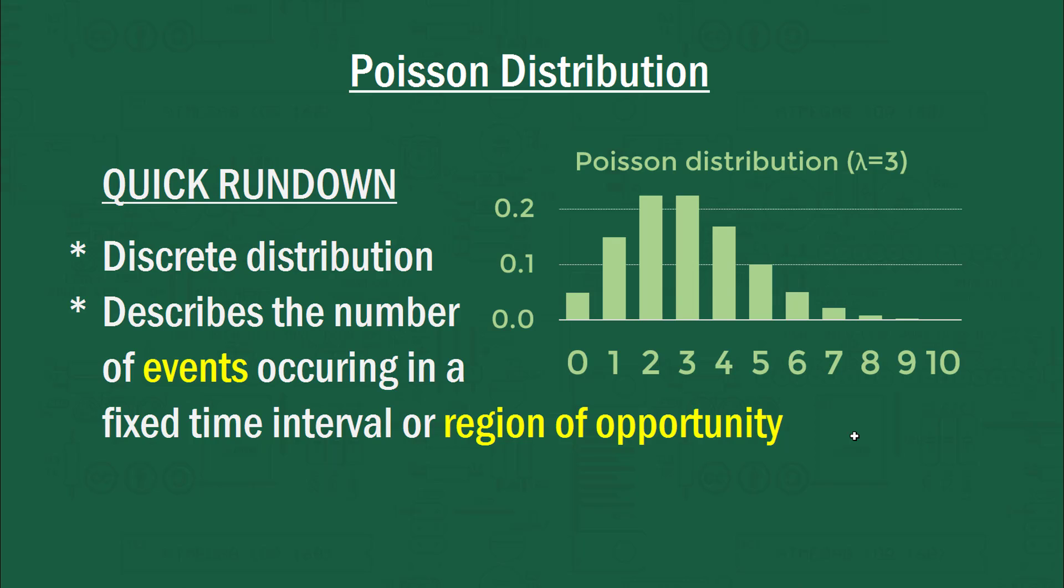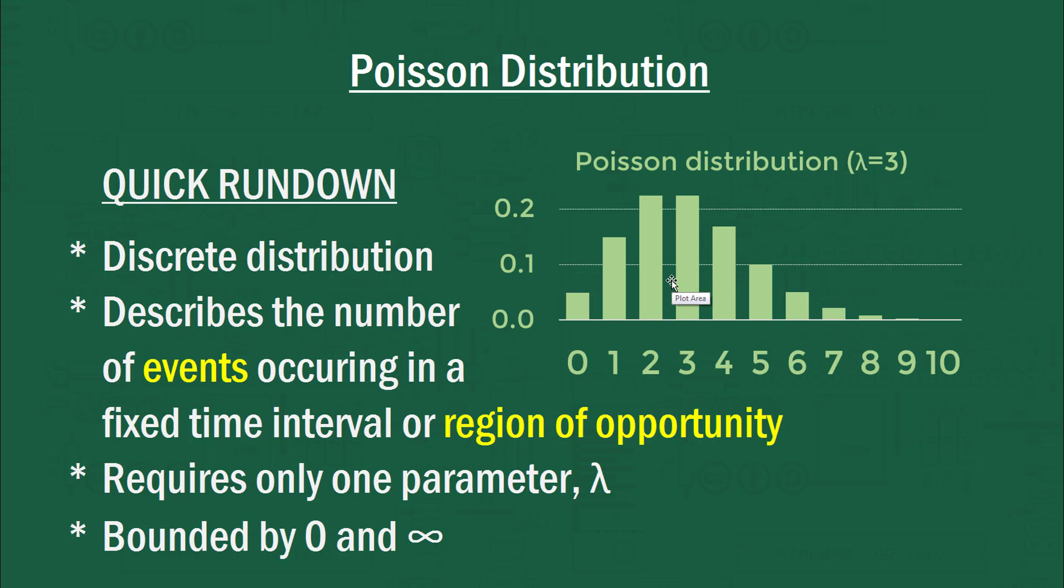Back on topic. The next feature about the distribution is that it requires only one parameter, which is the expected number of events per time interval lambda. So in this case, I've put a distribution here with lambda equaling three. So maybe that's three customers every hour or whatever.